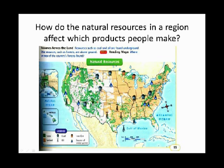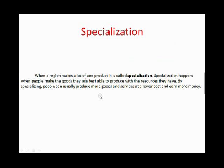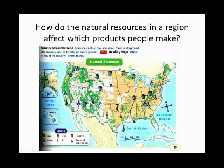You have different areas of specialization, and these are each regions. So here's the definition: when a region makes a lot of one product, it is called specialization. Specialization happens when people make goods that they are best able to produce with the resources they have. So New York can't make coal because we don't have coal. But we have other things—we're a very commercial region. New York City is where a lot of the headquarters of commercial companies are. We're like the heads of banks, kind of the commercial side of the economy. Upstate New York is different, though.